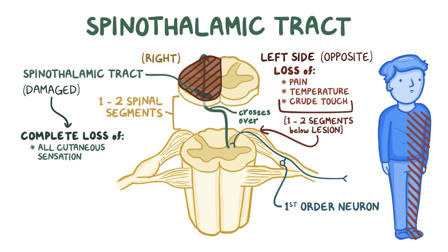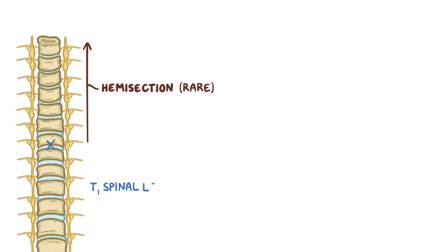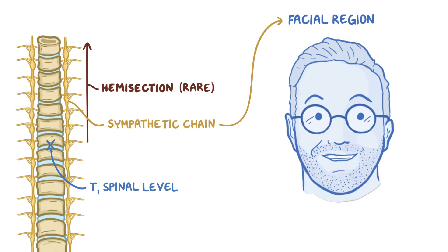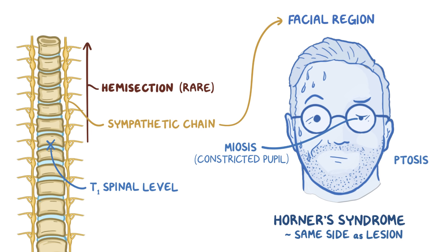Besides those three tracts, very rarely a hemisection of the spinal cord above the T1 spinal level can also damage the sympathetic chain that runs alongside the spinal cord and supplies the facial region. This leads to Horner's syndrome on the same side of the face as the lesion, which includes symptoms of miosis or constricted pupil, ptosis or droopy eyelid, and anhidrosis or failure to sweat.